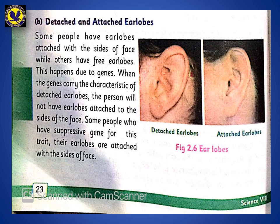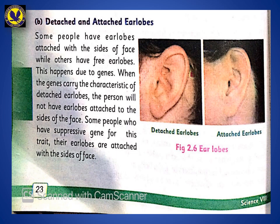یہ بھی جینز کی وجہ سے ہوتا ہے۔ کچھ جین ہیں جو کان کے اس حصے کو فیس کے ساتھ جوڑ کے رکھتے ہیں۔ اگر جین صحیح کام کر رہا ہو تو کان کا یہ حصہ جڑا ہوتا ہے۔ اگر جین چھپ جائے تو آپ کا ائر لوپ اٹیچ ہوا ہوگا۔ اور اگر جین کام کر رہا ہو تو کان ڈی اٹیچ ہوگا، یعنی فیس سے تھوڑا الگ ہوا ہوگا۔ یہ کریکٹر پیرنٹس سے بچوں میں منتقل ہوتا ہے۔